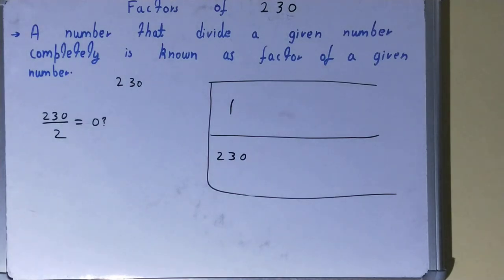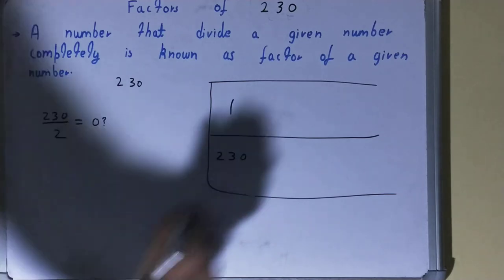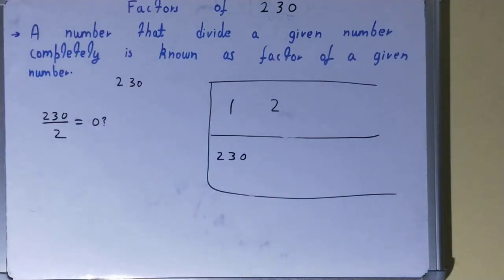If I divide 230 by 2, will I get the remainder zero? The answer is again yes, because 230 is an even number and all even numbers are completely divisible by the number 2. So 2 is a factor, and 2 into what times? 2 into 115 times. So 2 will be